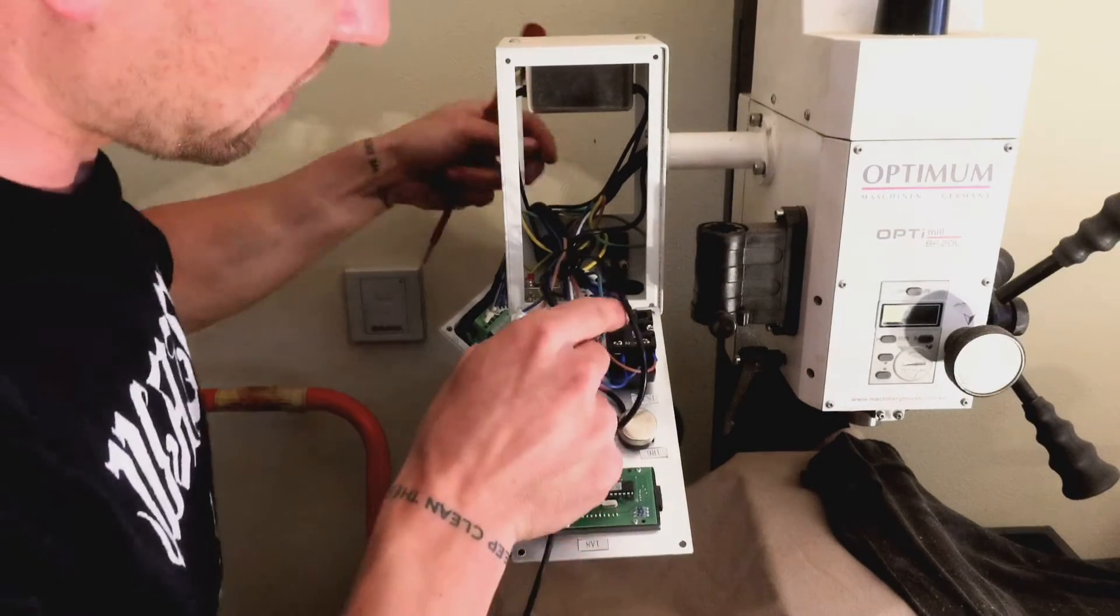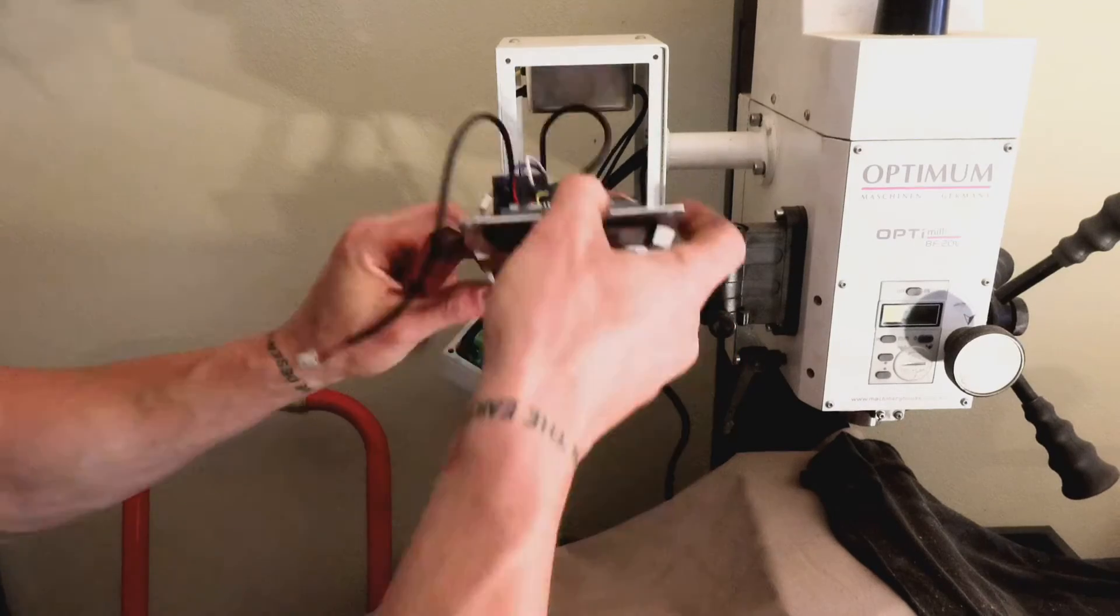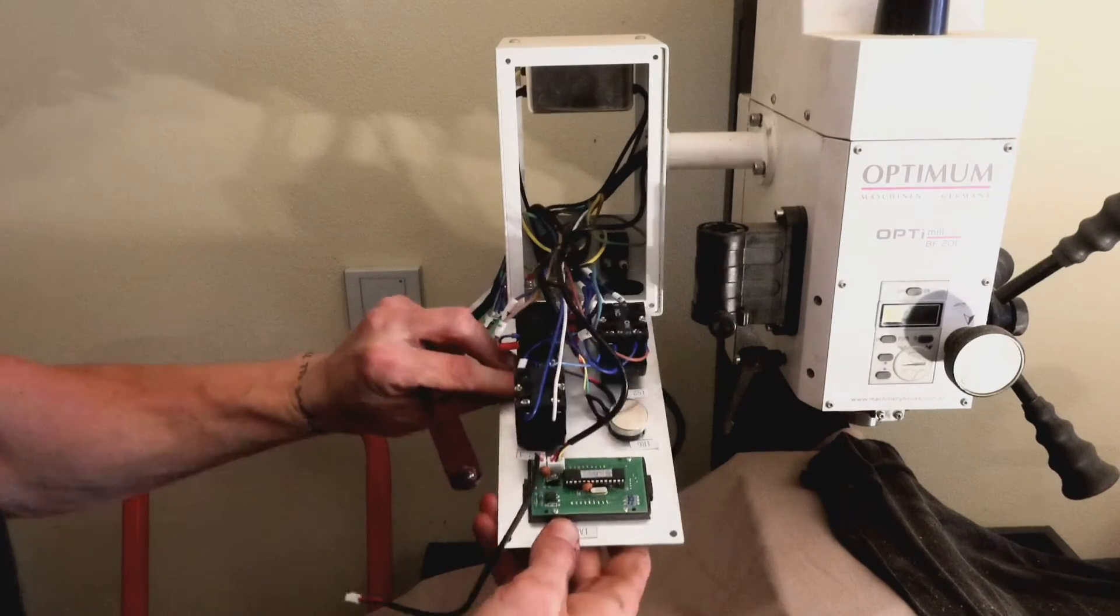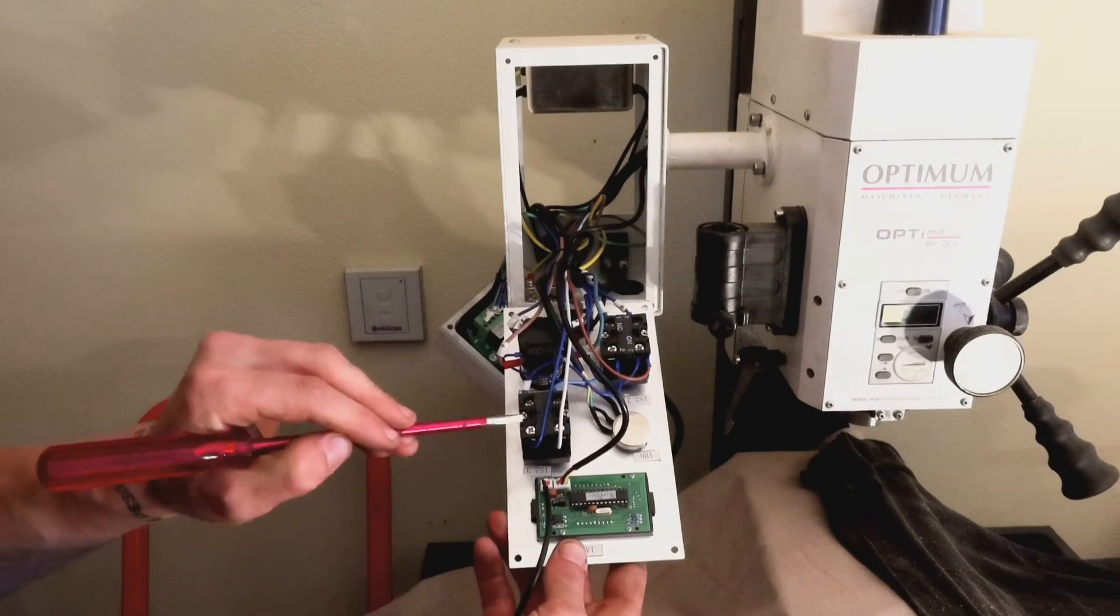Next up is blue. So he follows the white along. Again, if we look at it on the e-stop, if we look at it from this direction, it's lower left.